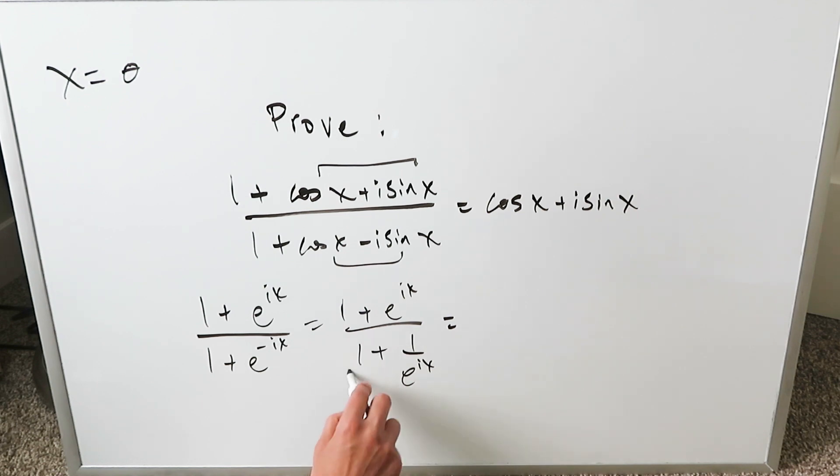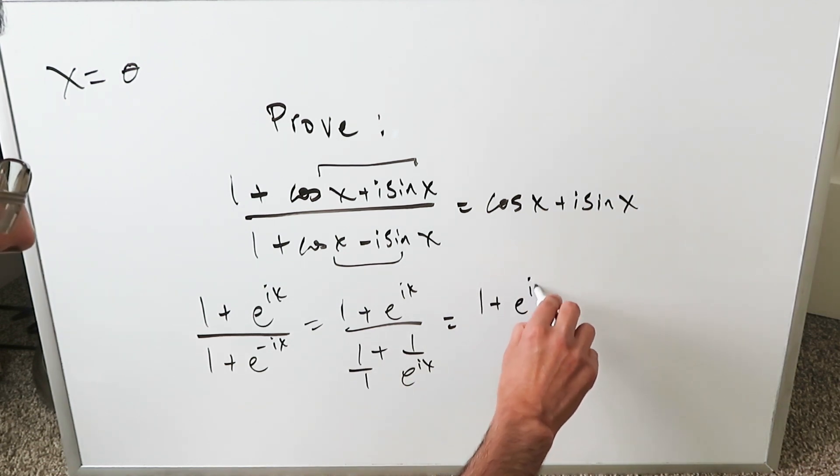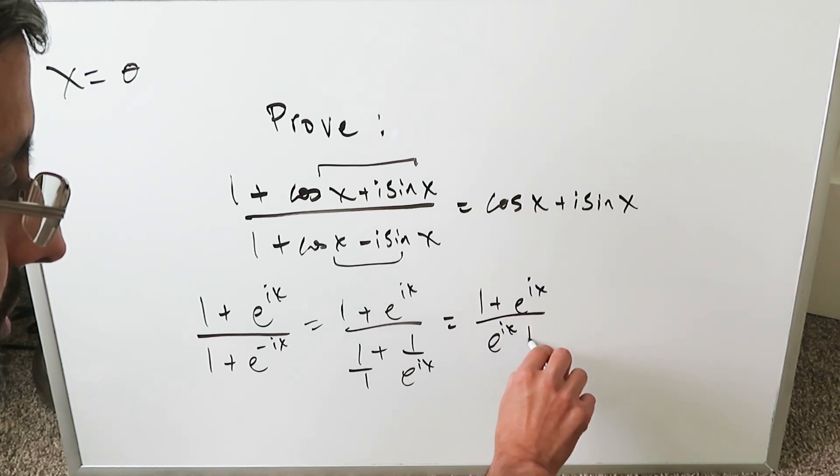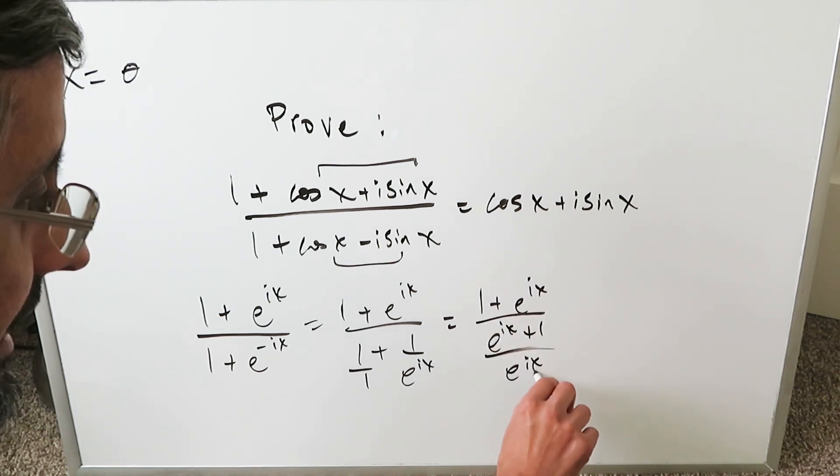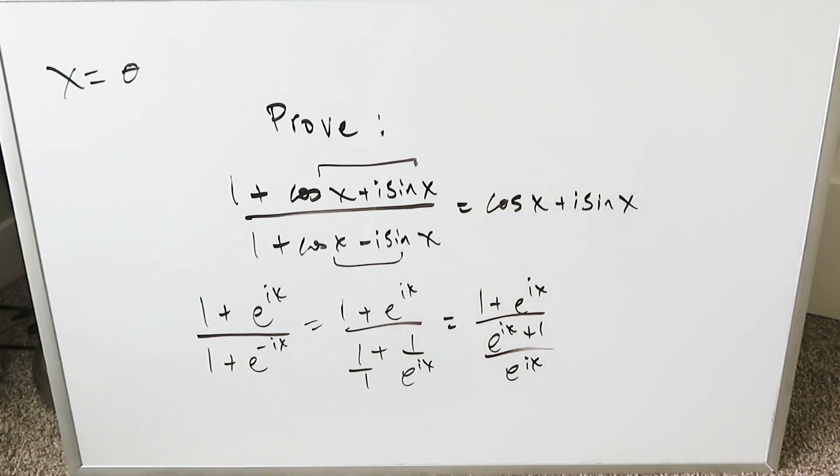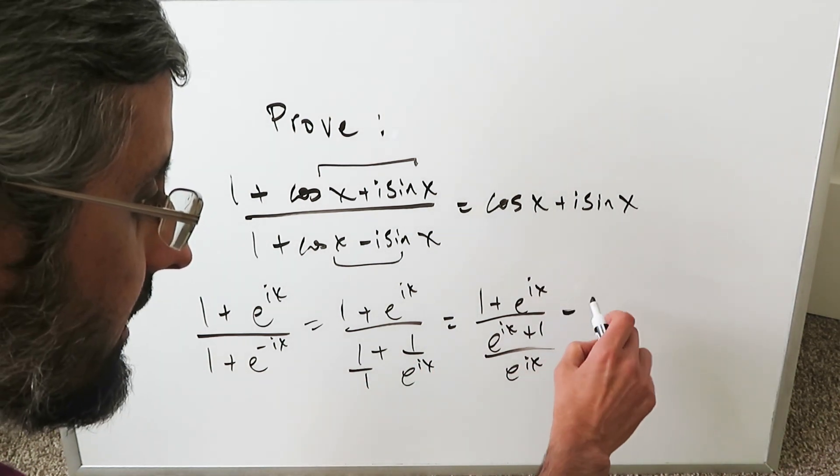In the denominator, converting to a common denominator: (1 + e^(ix)) divided by (e^(ix) + 1)/e^(ix). I've done the common denominator algebra. I'm going to flip everything over here.